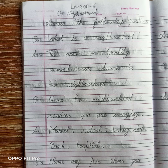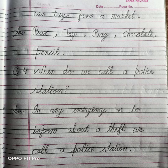Question number three: name any five items you can buy from a market. Aap market se koi bhi five items likh sakte hain. For example: box, toy, bag, chocolate and pencil. Aap apne according bhi yahan likh sakte hain.